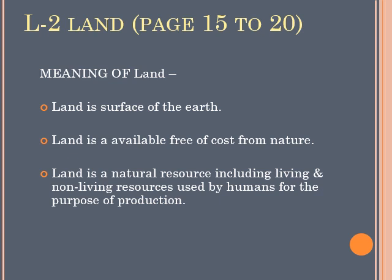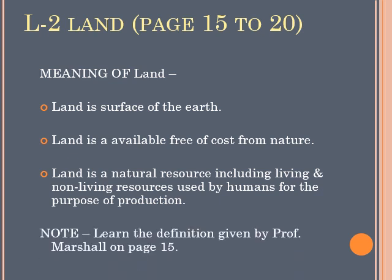Basically all these 3 points tell us what is land. The first thing we come to know is that land is actually the surface of the earth — the solid ground. Second, it is available to anybody and everybody free of cost, given by nature. And third, land is a natural resource that includes living as well as non-living resources used by humans for production. Please open your book to page number 15 and learn the definition of land given by Professor Marshall.